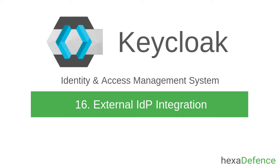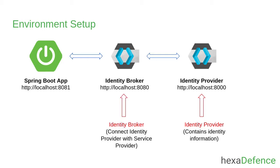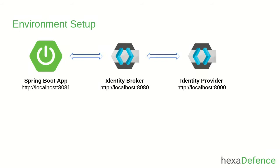First of all, I will explain my server setup for this example. I am using a single Spring Boot application and two Keycloak servers. One server is acting as the identity broker and the other one is acting as the identity provider. You can see I have mentioned the port numbers of each server in this diagram.